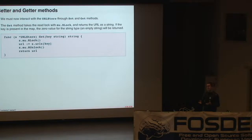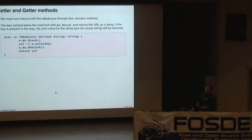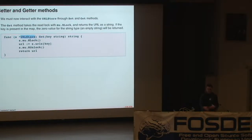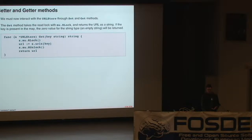In order to access the map mediated by the lock, we need to add setter and getter methods. The get method will take the read lock by calling mu.RLock, then return the URL string after unlocking the read lock. The function name is get, the function receiver is on a pointer to URLStore, the first argument is a key string, and it returns a string. First we call s.mu.RLock, then extract the URL from the map, unlock the read lock, and return that URL.